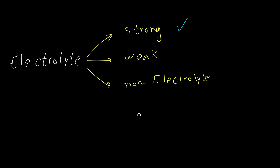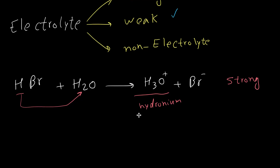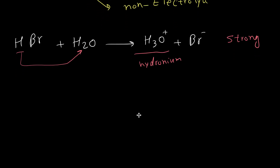We now know what strong and weak electrolytes are for ionic compounds. In addition to ionic compounds, there are some molecular compounds that can be strong or weak electrolytes. For example, HBr is a molecule — there is no cation or anion. But when it dissolves in water, it reacts with water and produces H3O+ and Br-. HBr donates one proton to water and dissociates into hydronium cation and bromide anion. HBr, or hydrobromic acid, dissociates 100 percent during this process, so a solution of HBr is a strong electrolyte. There are six strong acids that always dissociate 100 percent and are strong electrolytes — we should memorize their names and formulas.